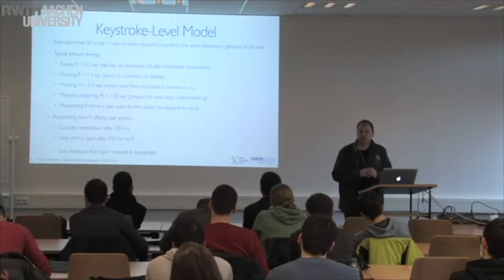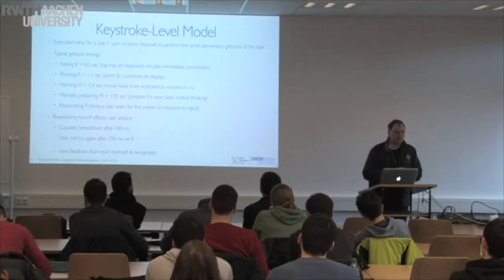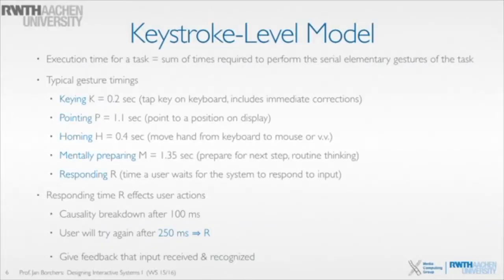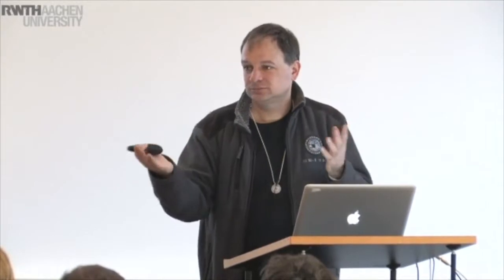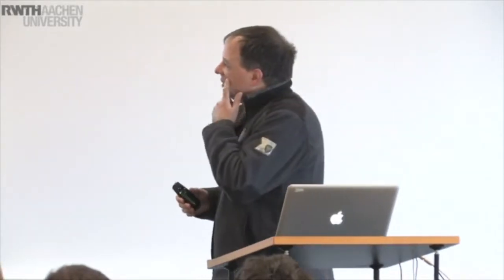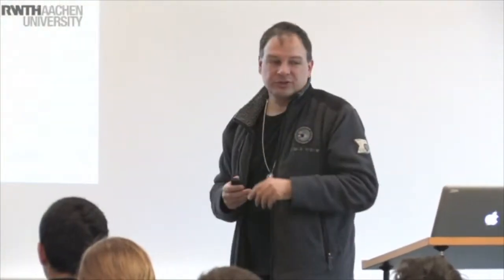Pointing to something on the screen — starting anywhere and going anywhere else — on average takes 1.1 seconds, as measurements have shown. We could do better than that average using Fitts' law to get a much better estimate. But the point here is that we don't model things too precisely; we take averages to get a rough rule of thumb for how long something is going to take.